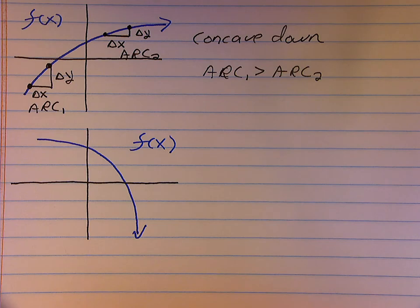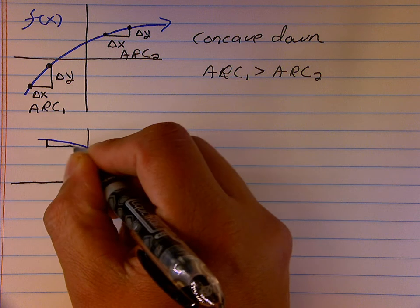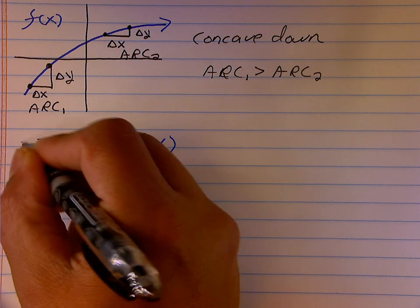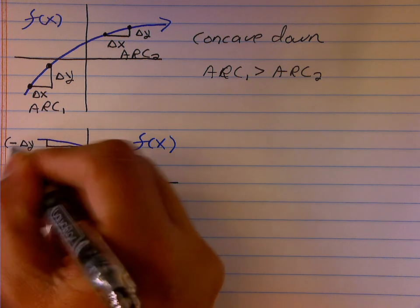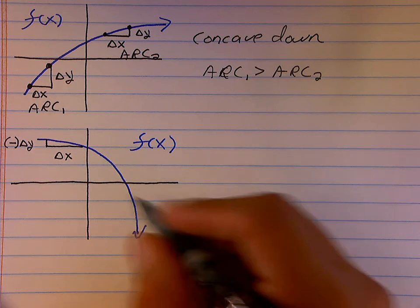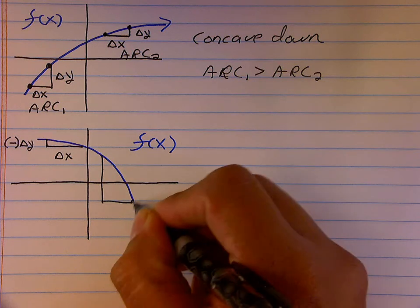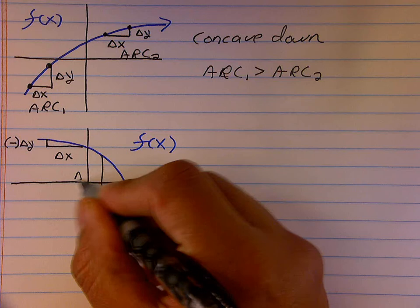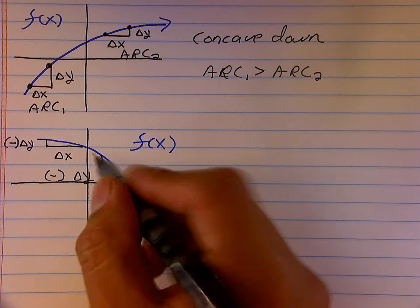Here we are given another function. Again, the average rate of change is changing. If I look at this first point here, notice delta y is a negative value. It's not necessarily described with a negative symbol in front — I'm just putting it to illustrate that this is a negative value. If I go the same distance in x at a second pair of points, my delta y is even more negative.